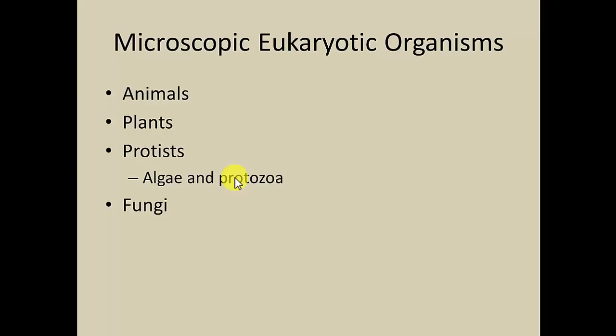Next, we're going to talk about some of the eukaryotic organisms. There are four broad types of eukaryotic organisms. All living things are either a prokaryote or a eukaryote. The prokaryotes are the bacteria and the archaea. Everything else — if it's not a bacteria or an archaea — is considered a eukaryote. All animals, all plants, all fungi, and the protists, which consist of algae and protozoa, fit into the eukaryotic grouping.